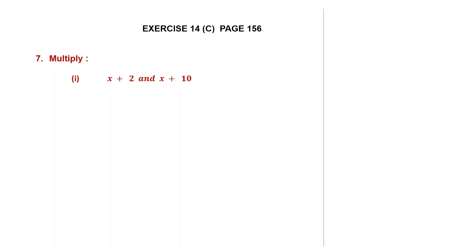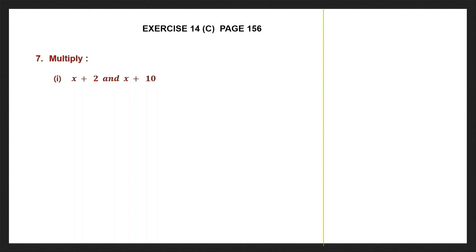We are continuing with multiplication, question 7. Here we are multiplying two binomials. The first one is a binomial and the second is also a binomial. So we can arrange them one below the other, in columns.